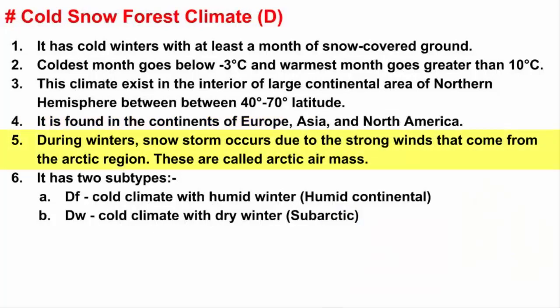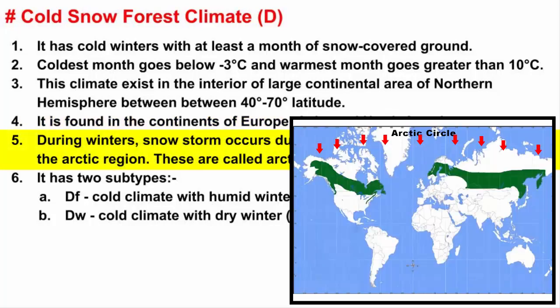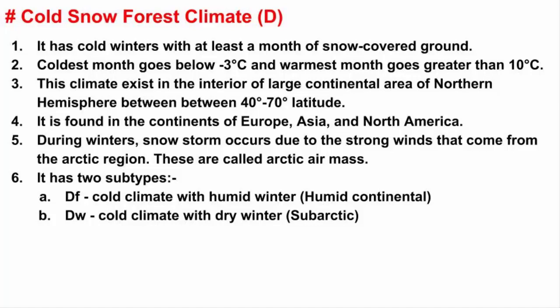During winters, these regions witness snowstorms because of the strong winds that come from the Arctic region. These are called Arctic air masses. In the next video, we will learn about the two subtype climates that exist under this group.